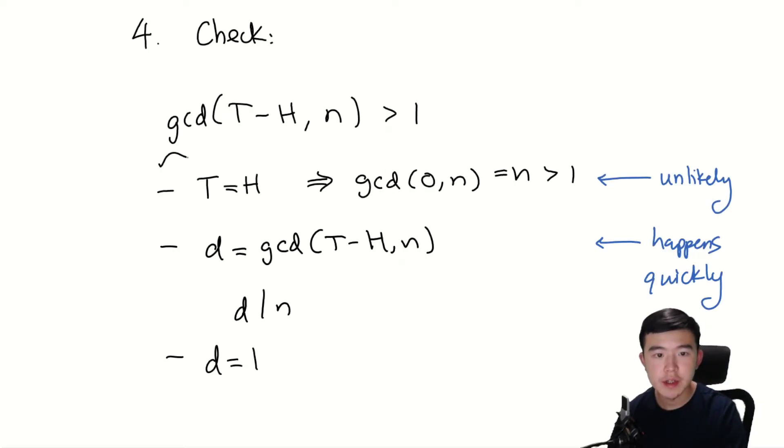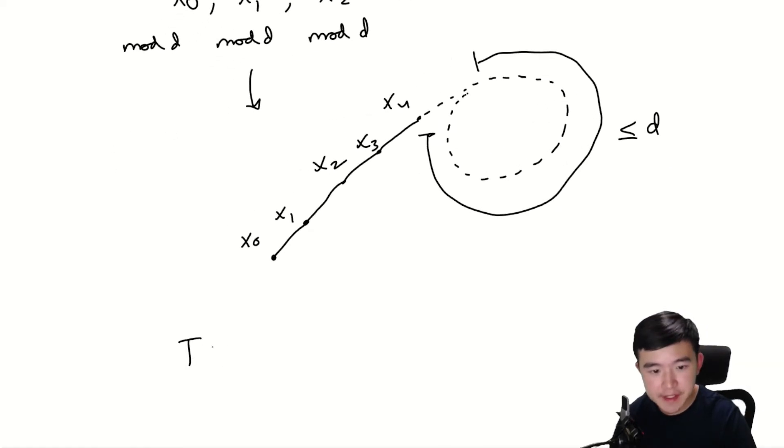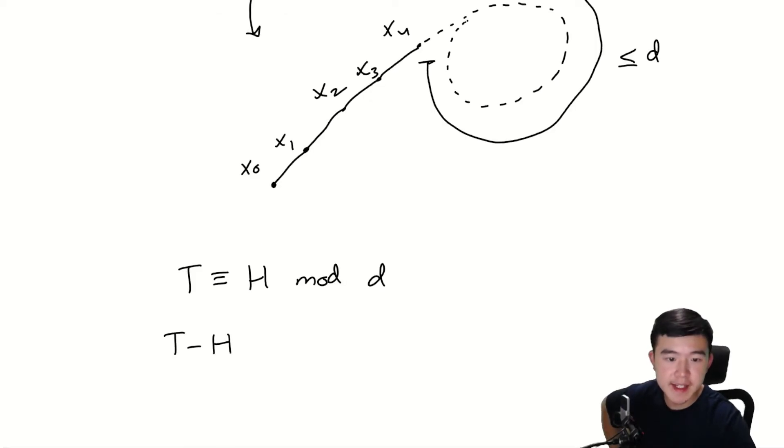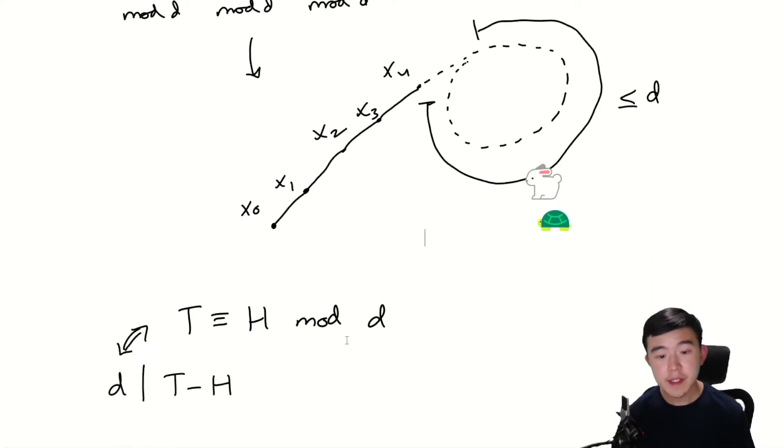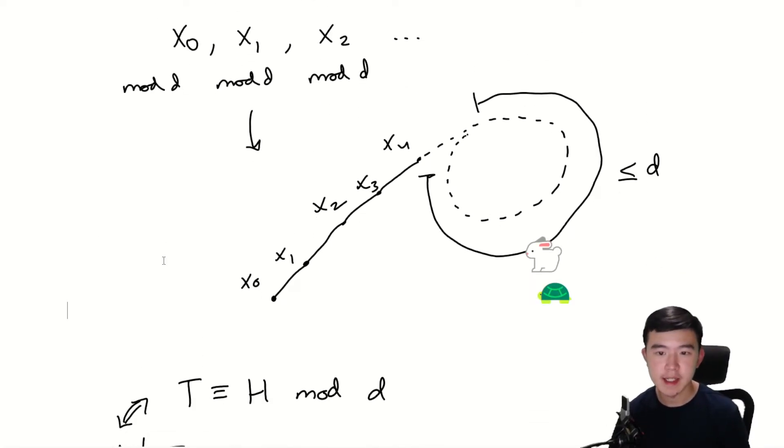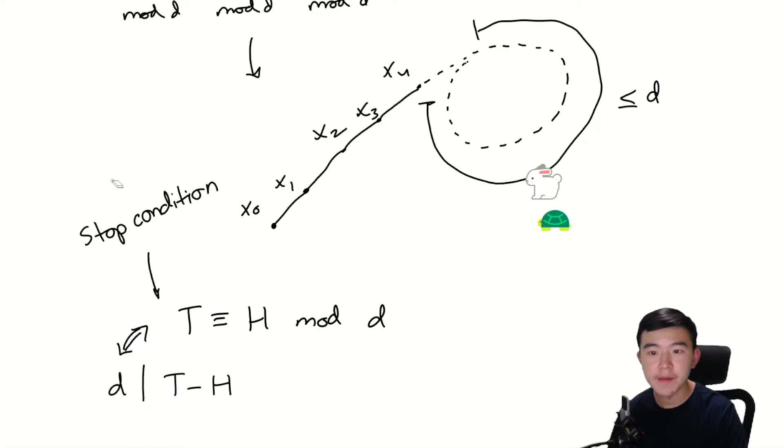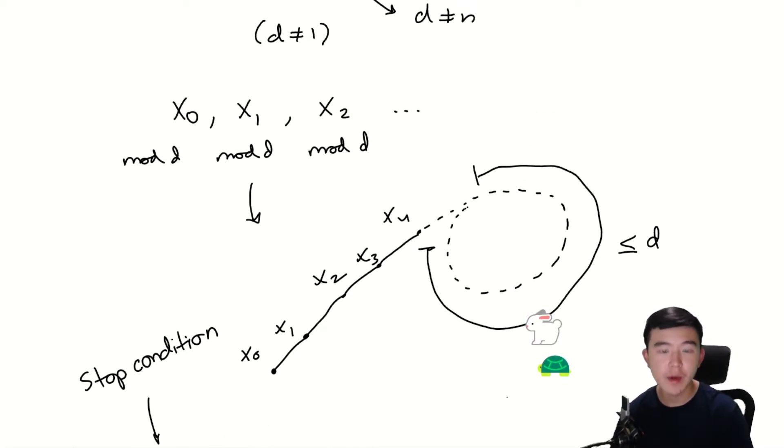Now recall the stop condition of our algorithm. It tests whether the GCD of the tortoise minus the hare and n is greater than 1. This number equals d. So what we're really checking for is if t is congruent to h mod d, because this would mean that t minus h is a multiple of d. And if this is true, it means that the tortoise and the hare are at the same place on this new sequence, because everything has been modded out by d. So what our stop condition is really checking for is if the tortoise and the hare are at the same place on this new graph.